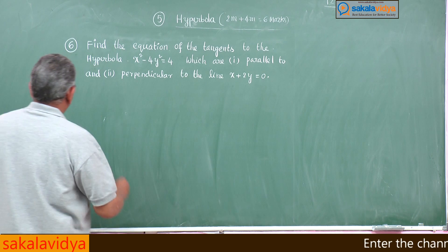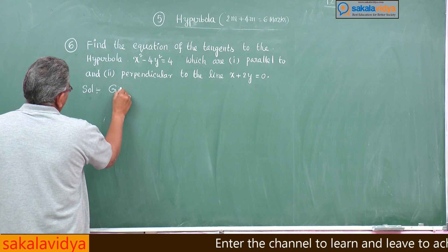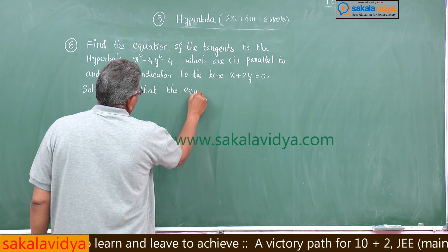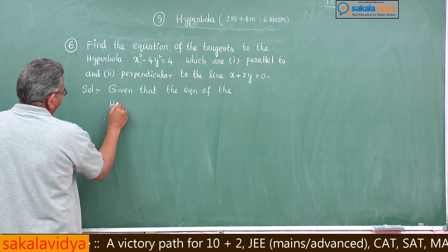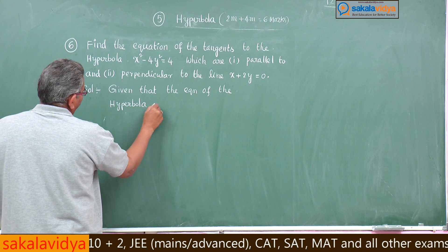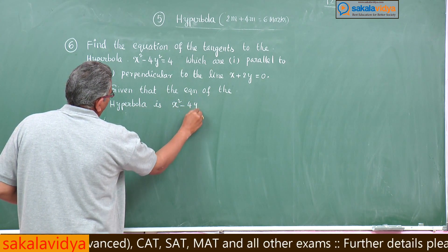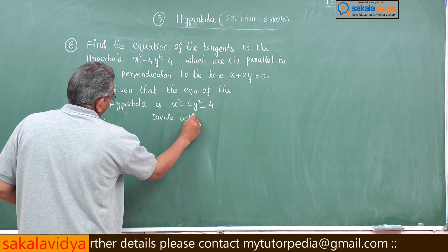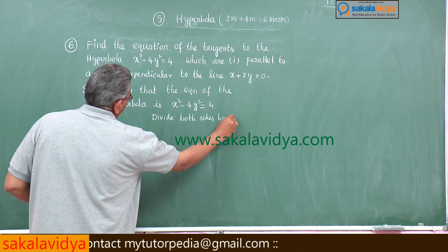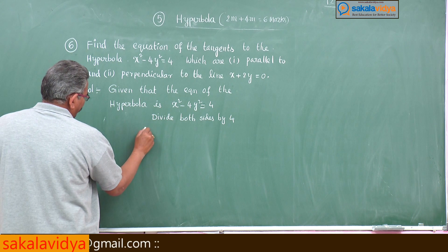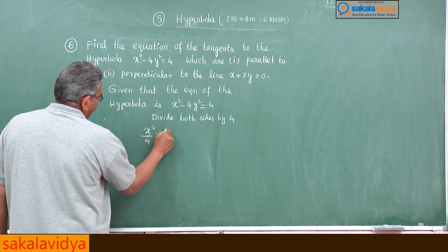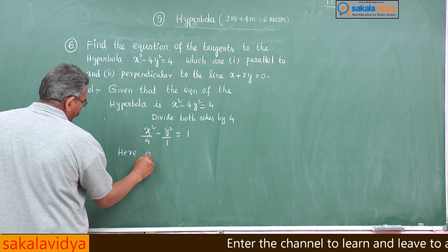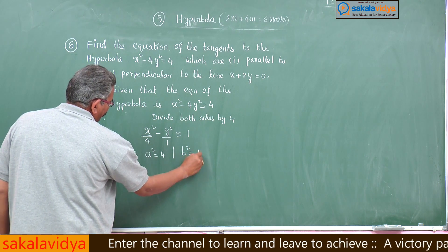Let us do the problem. Given that the equation of the hyperbola is x² - 4y² = 4. Dividing both sides by 4, we get x²/4 - y²/1 = 1. Here a² = 4 and b² = 1.